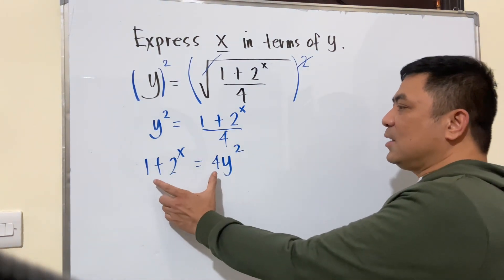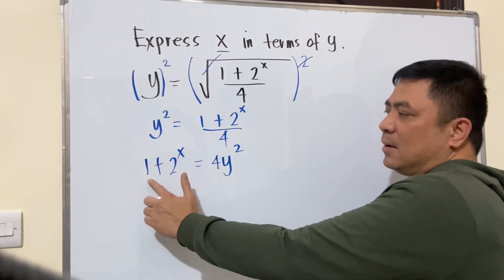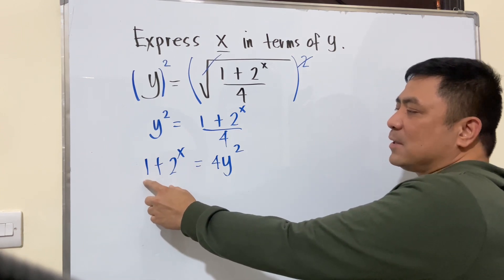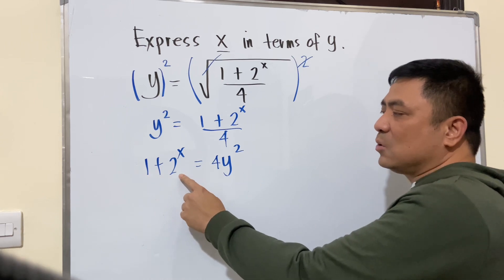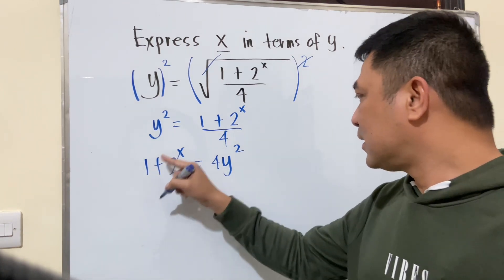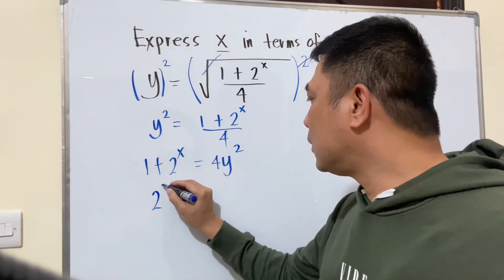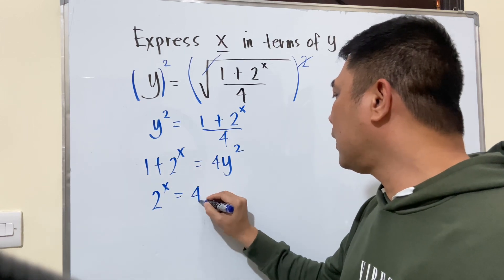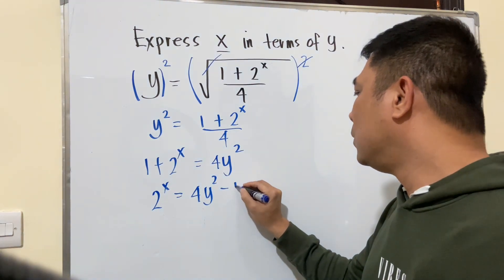The next challenge is how we can eliminate 1 or remove 1 here from our left side of the equation, so that what's left here is 2 raised to x. So just transpose this one. So 2 raised to x equals 4y squared minus 1.